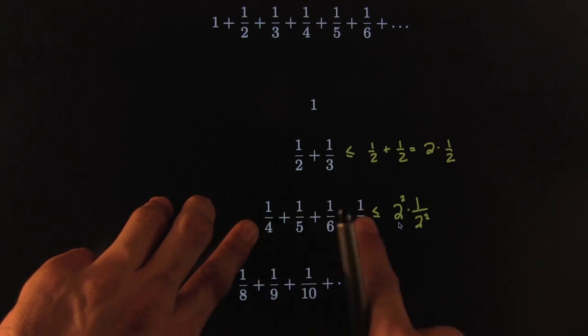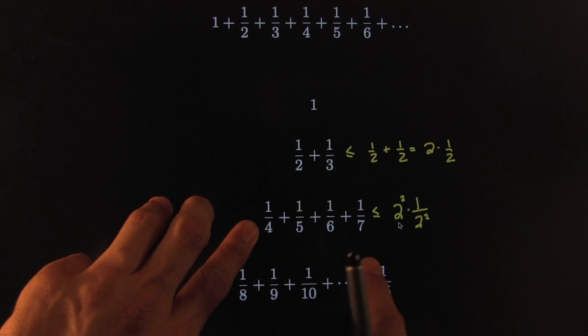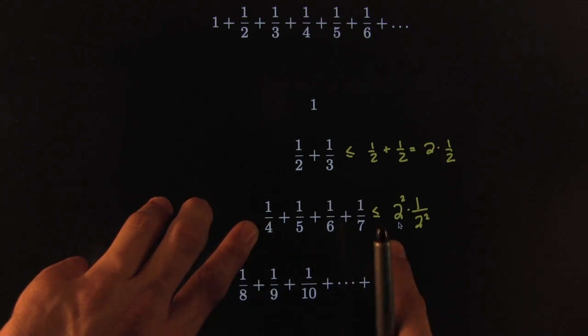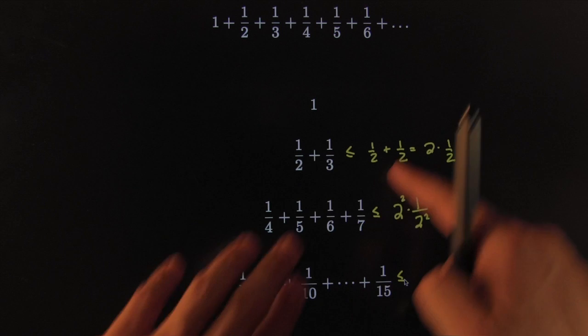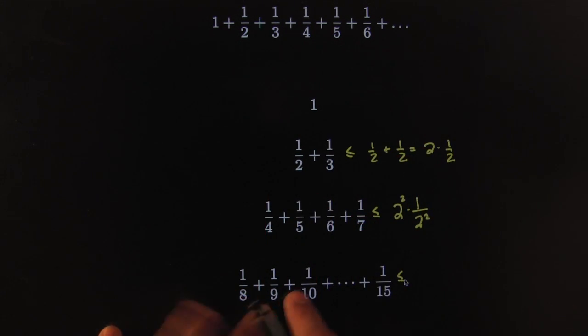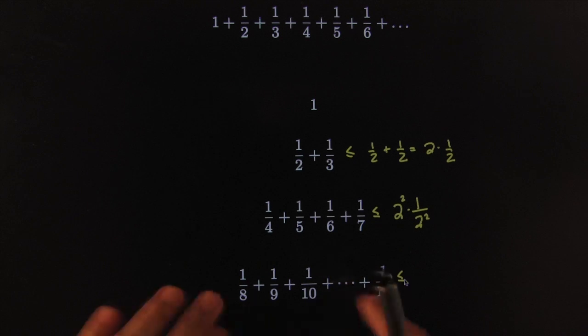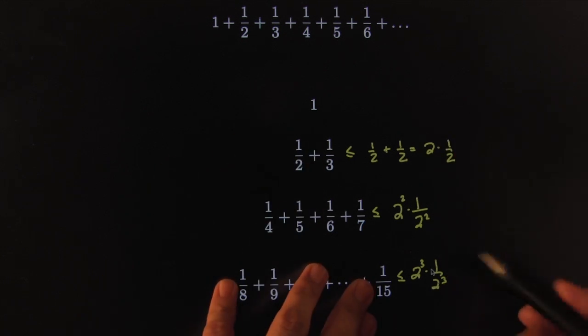That part right there is a key idea. They're all smaller than the next one, or the next one is always smaller than the previous one. That's called descending. The next one, here we did 2 items, here we did 4, the next one we do 8. They start off with 1 eighth. They're getting smaller, so they're all smaller than the first one. I've got 8 of them, so I've got 2 to the 3rd and they're all smaller than 2 to the 3rd.